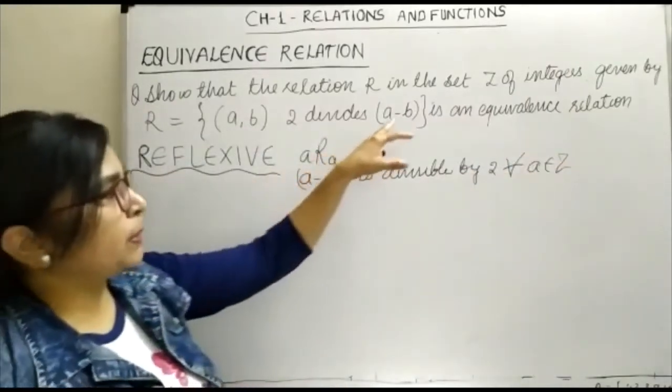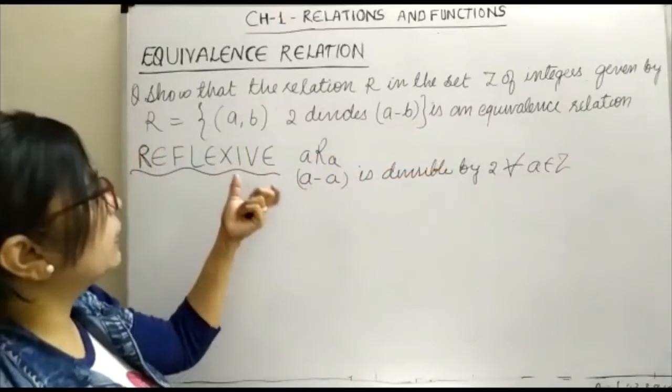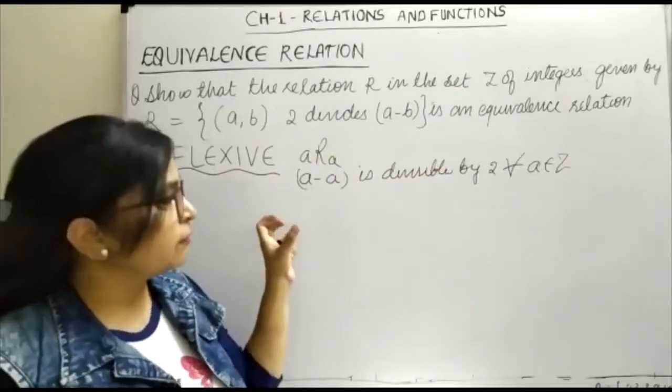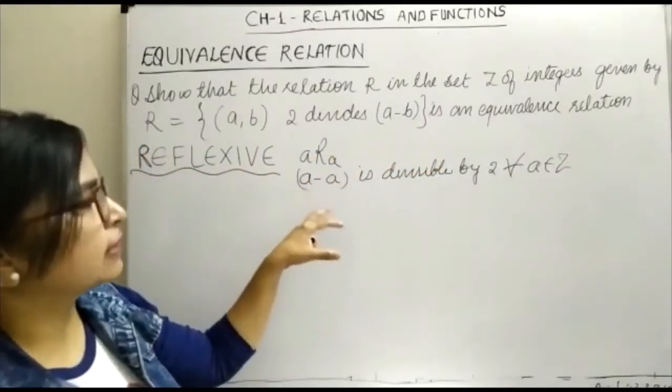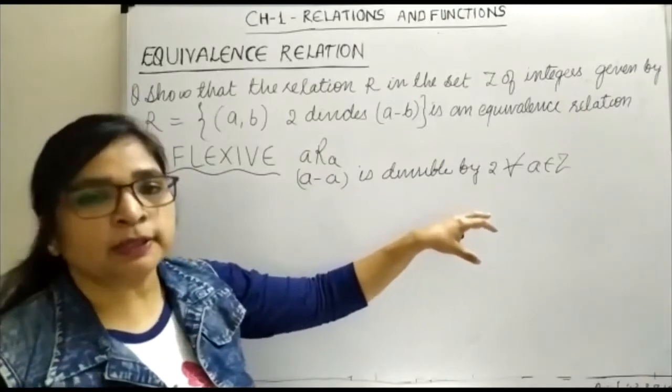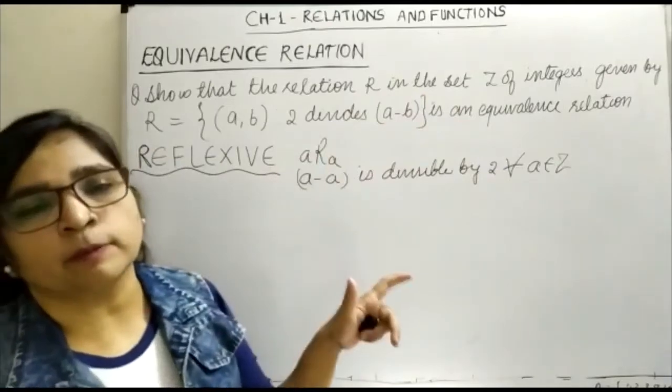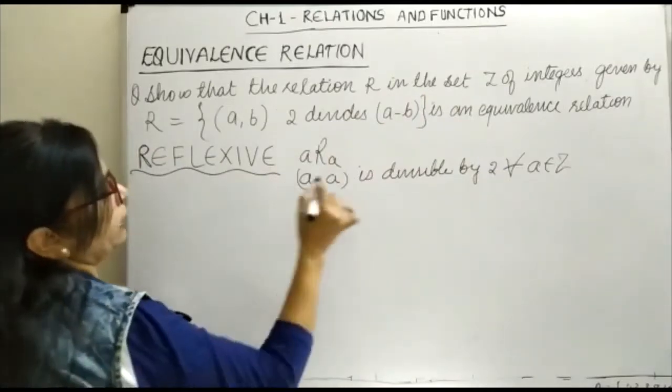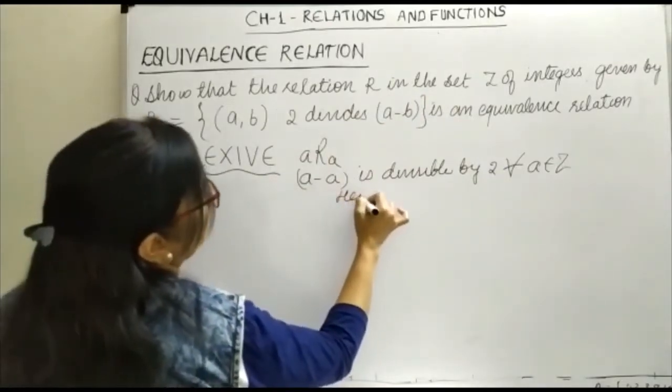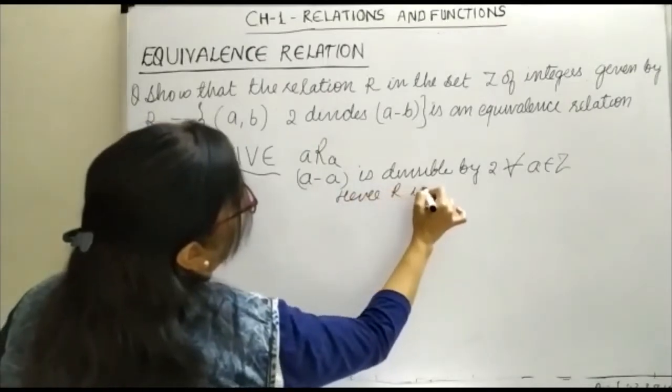When B is replaced by A, every ordered pair is divisible by 2 because A minus A is 0, and this is applicable for every element belonging to the set of integers. Therefore, reflexive property is satisfied and hence R is reflexive.